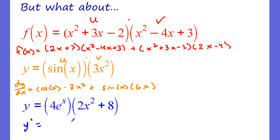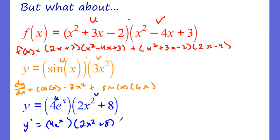Let's look at the next example. We call 4e to the x our u and 2x squared plus 8 our v. The derivative of 4e to the x is 4e to the x — it stays the same — times v, which is 2x squared plus 8. Plus, we keep u the same, 4e to the x, times the derivative of v, which is 4x. That is the derivative using the product rule.